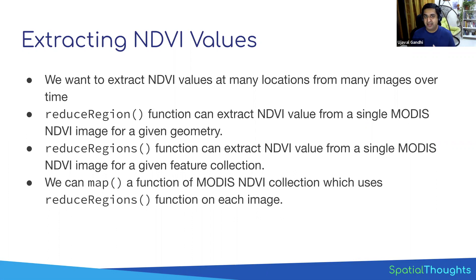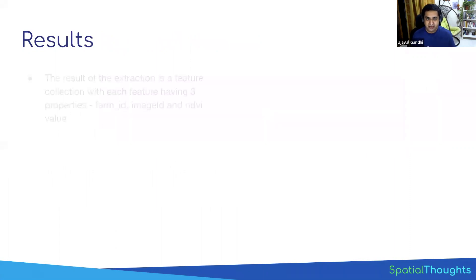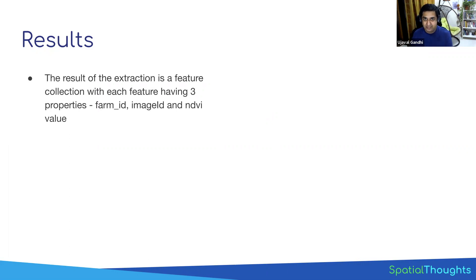So we can take a single MODIS image and run reduceRegions on a feature collection of 100 points, and get back a feature collection where each point has the NDVI value. But we also need to run this on every image in the collection. We write a function that uses reduceRegions for one image, then map it over the whole MODIS collection. That means we get one feature collection for every image in the year — we loop it twice — and once you do that you'll end up with all the values you need. The result is a nested collection, which you then call flatten on.